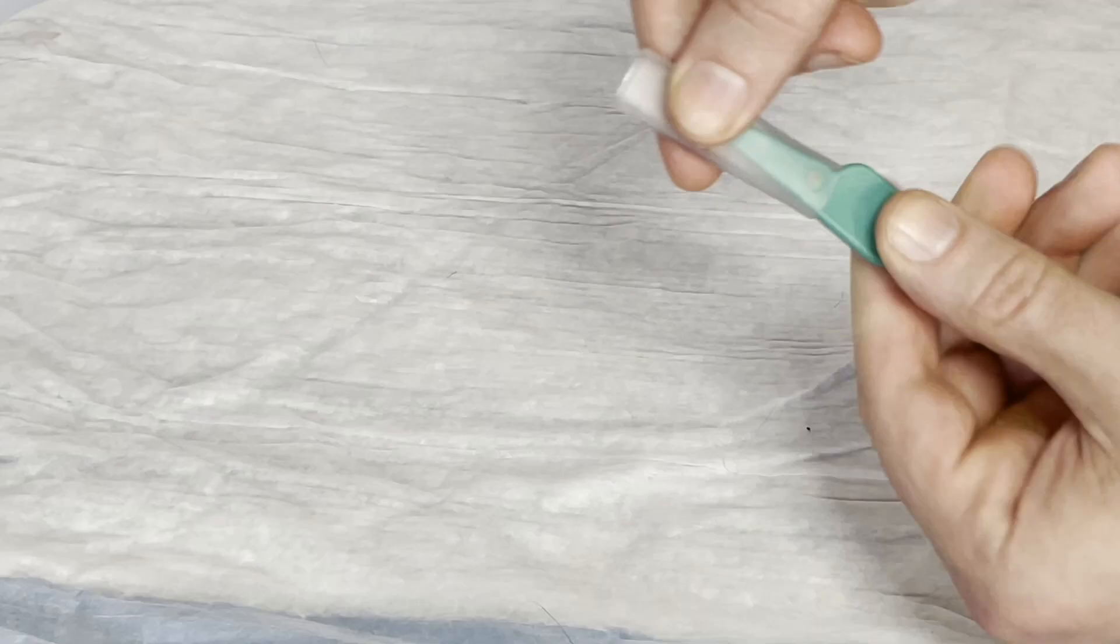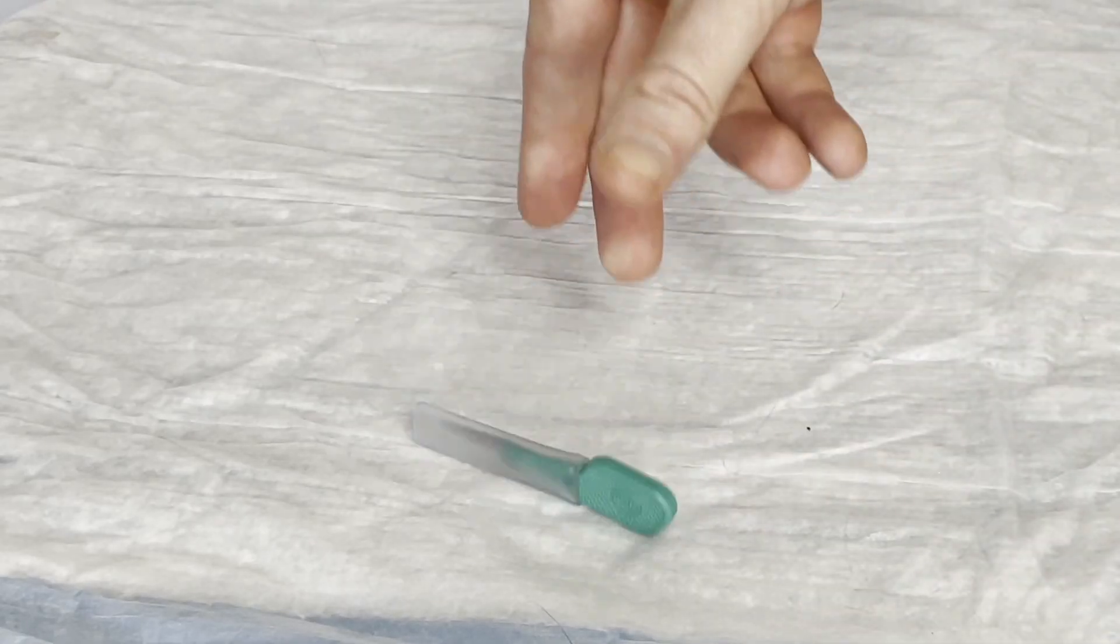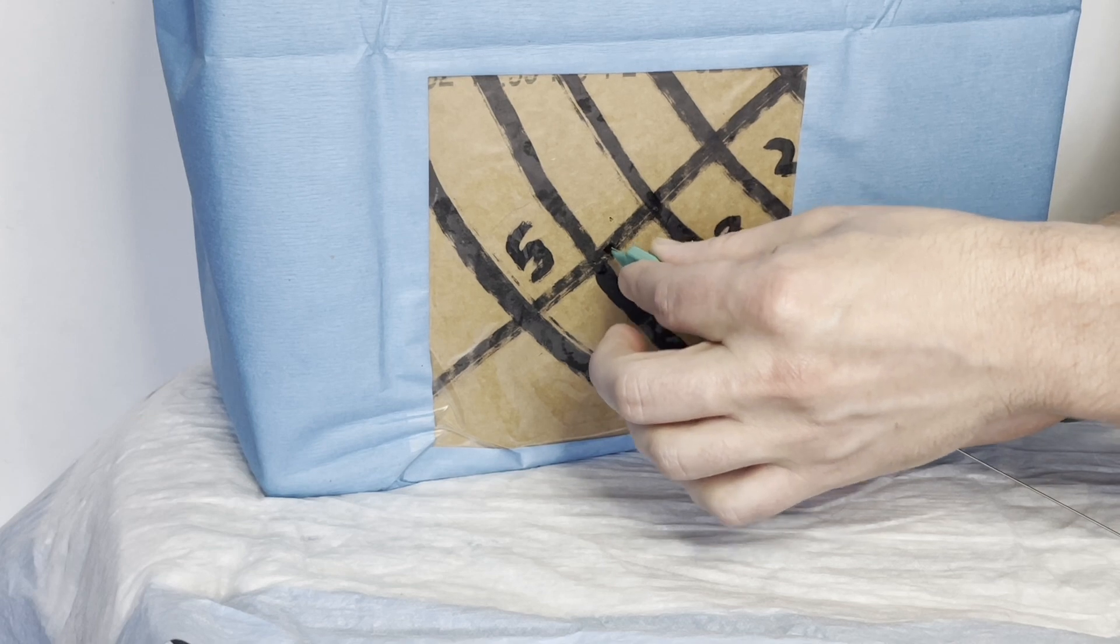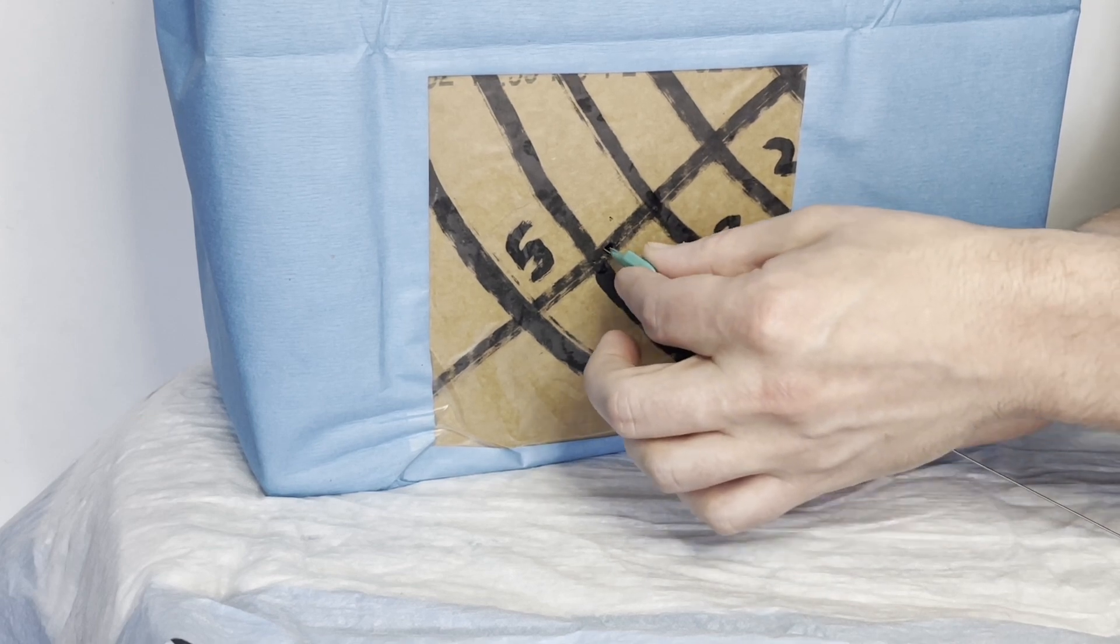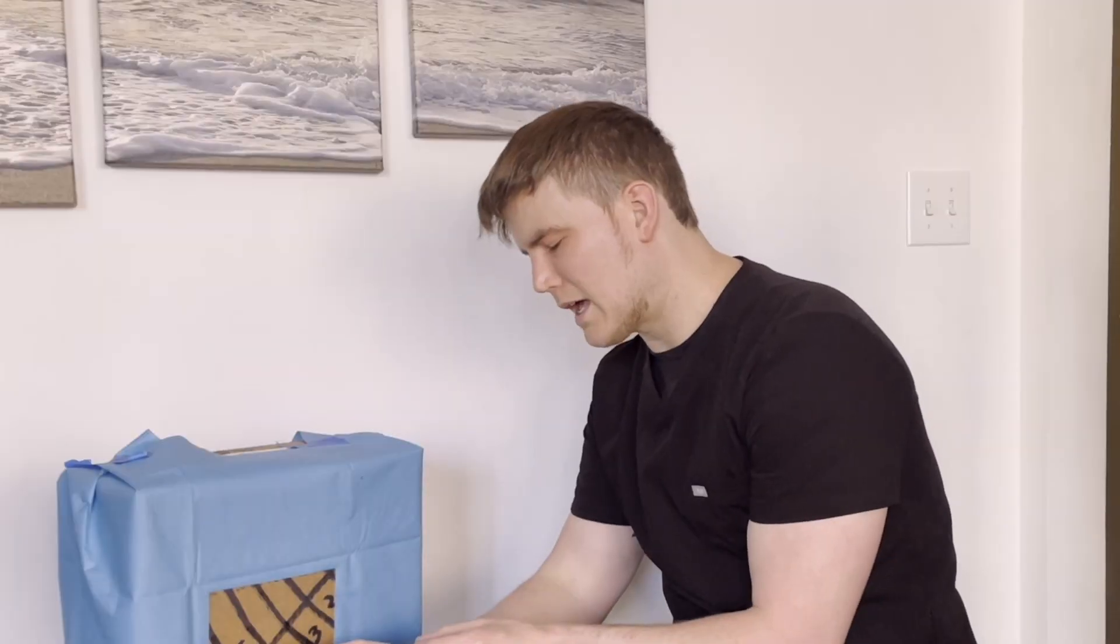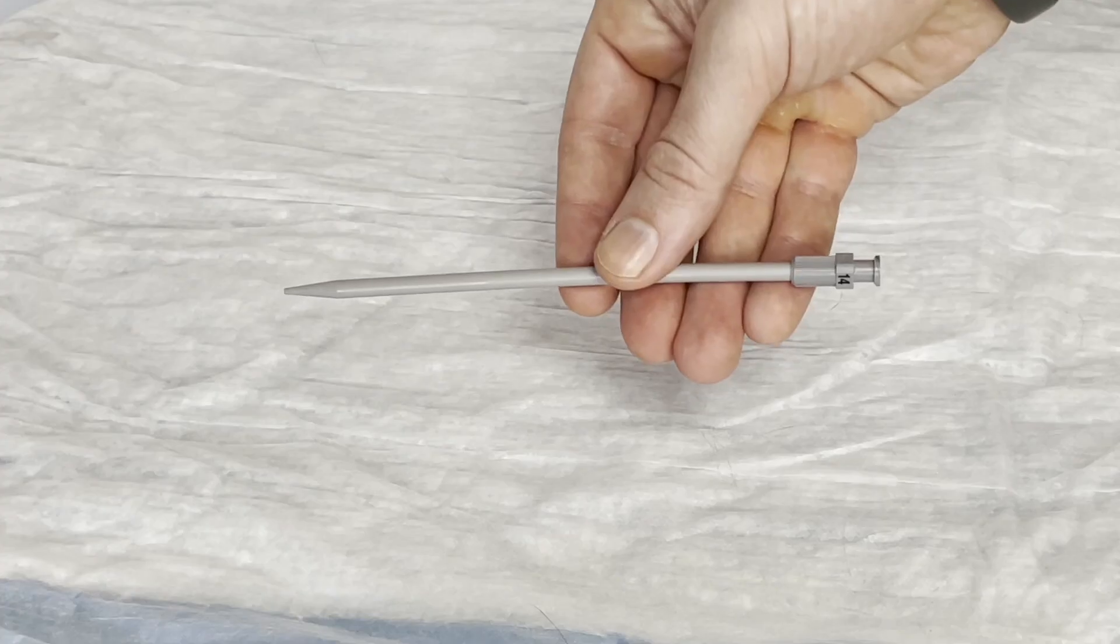Next up we have an 11 blade scalpel. We want to make a stab-like incision. We're going to invert the needle and we're going to push it along the guide wire here to make a nice stab incision.